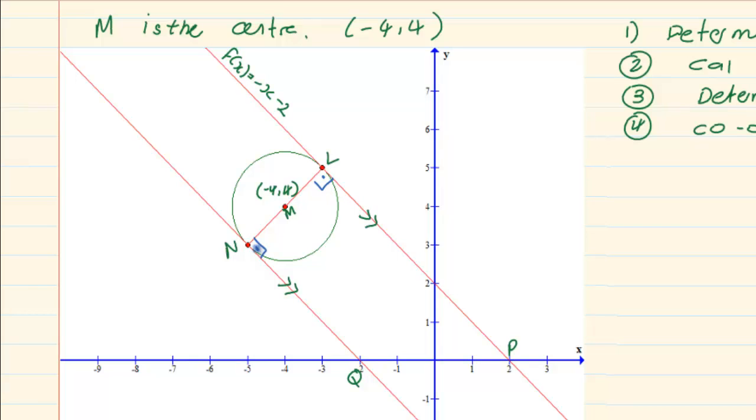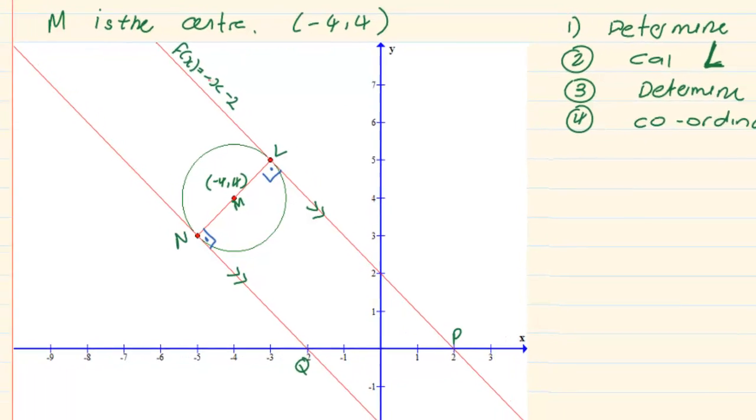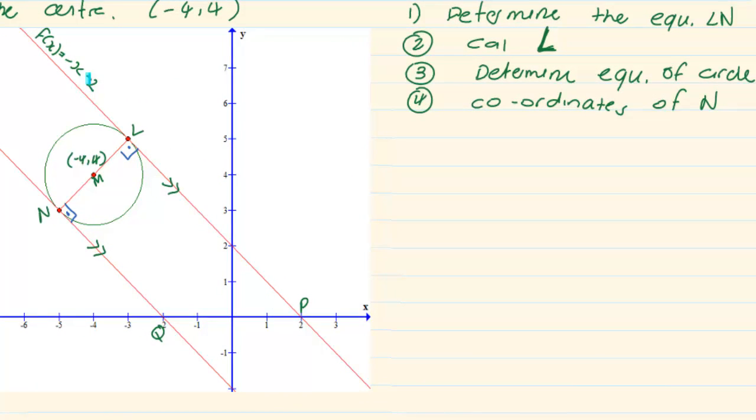Now if that is 90 degrees then they tell us determine the equation of LN. Now we have the gradient of LP. From this equation y = mx + c you can see that the m of LP is equal to -1. And since it is 90 degrees we know that the m now of ML is going to equal to 1.